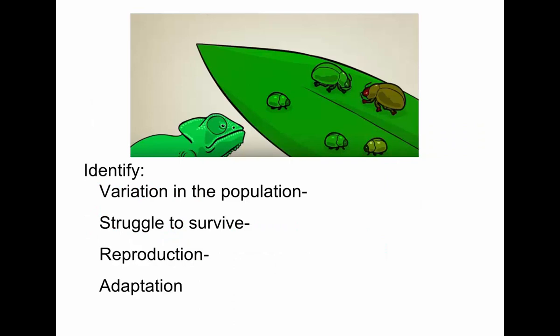So let's look at our steps of natural selection. What's the variation we see in this population of insects? The color, the size. So what is the struggle for survival being shown? There is a predator, and the brown ones, which don't blend in very well, are going to be more likely to be eaten. The green ones will be less likely to be eaten.